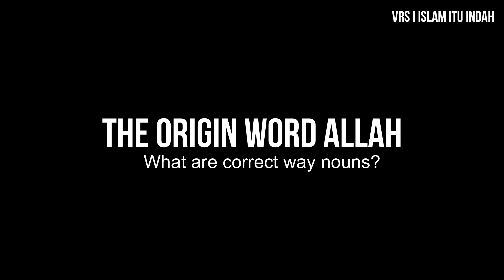Derived nouns come from a root word like the word مدرسة, meaning 'school,' which is derived from the root درسة, which means 'to study.' This type of words is the vast majority of nouns in Arabic.